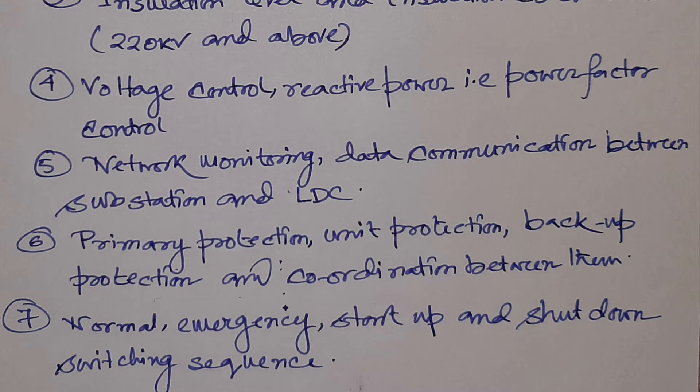Then comes the operating sequence — the normal operating sequence, emergency operating conditions, and what will be the operating conditions during startup and shutdown. For example, if a switchboard has two incomers and one bus coupler, the general tendency is that the bus coupler will be in open condition and the two incomers will be in closed condition, each taking 50% of the total switchboard load. This kind of operating philosophy — which transformer will be working, what will be standby, which breakers will be closed or open — all these things need to be considered during substation design.